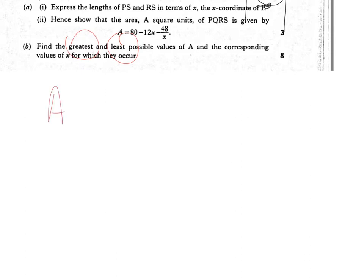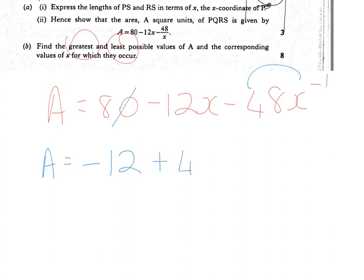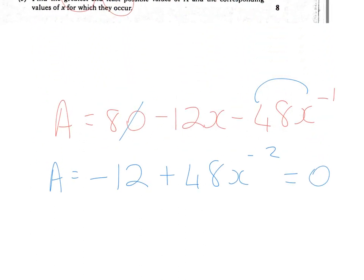So I'm going to, first of all, prepare to differentiate, so A equals 80 minus 12x minus 48x to the minus 1. I'm then going to differentiate that, so the constant goes, and I get minus 12, bring this down, multiply, that'll give me plus 48x to the minus 2, and it's stationary points, so I'm going to make the differentiated function equal to zero.